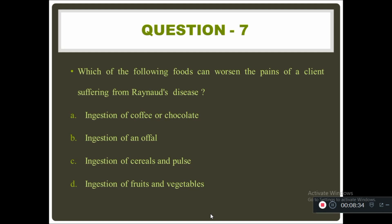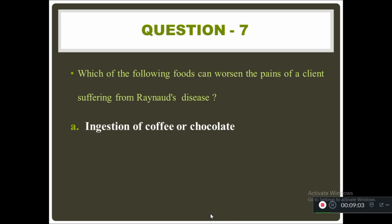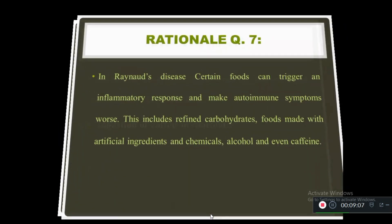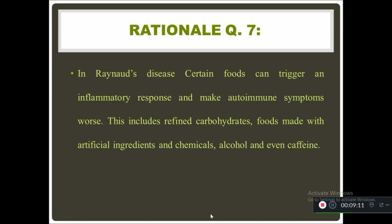Question seven: which of the following foods can worsen the pain of a patient suffering from Raynaud's disease — ingestion of coffee or chocolate, ingestion of offal (diseased animal body parts), ingestion of cereals and pearls, or ingestion of fruits and vegetables? The right answer is ingestion of coffee or chocolate. Patients with Raynaud's disease should avoid coffee and chocolate because these foods contain additive substances that can trigger inflammatory response and worsen autoimmune symptoms. Foods containing artificial ingredients, chemicals, alcohol, and caffeine should also be avoided.